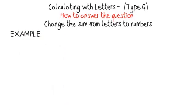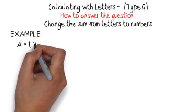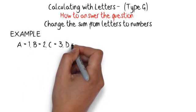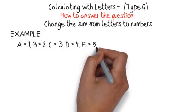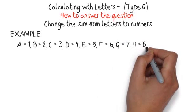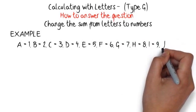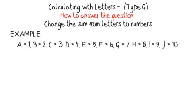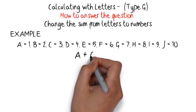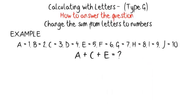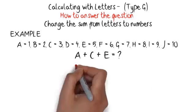Example: a equals 1, b equals 2, c equals 3, d equals 4, e equals 5, f equals 6, g equals 7, h equals 8, i equals 9, j equals 10. The sum to solve is: a plus c plus e equals?